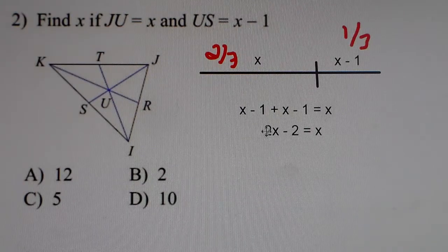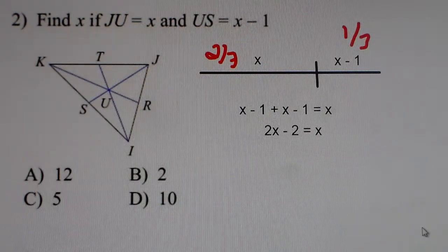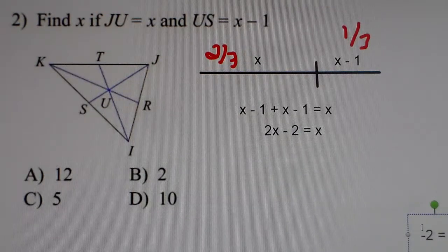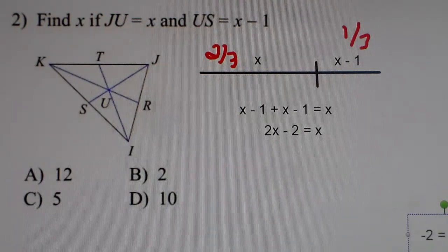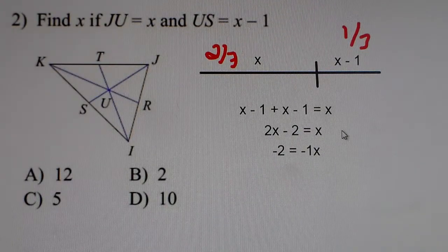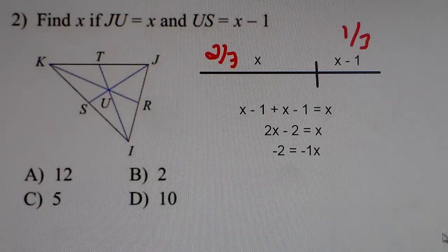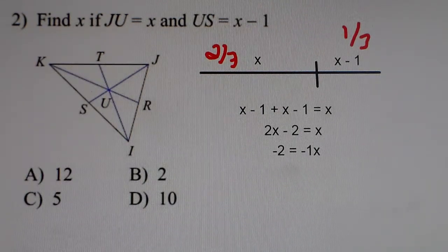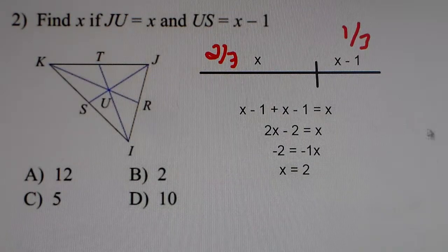We subtract 2x from both sides, and we get negative 2 equals negative 1x. Then divide by negative 1, and we get x equals 2. So the answer to number 2 is x equals 2.